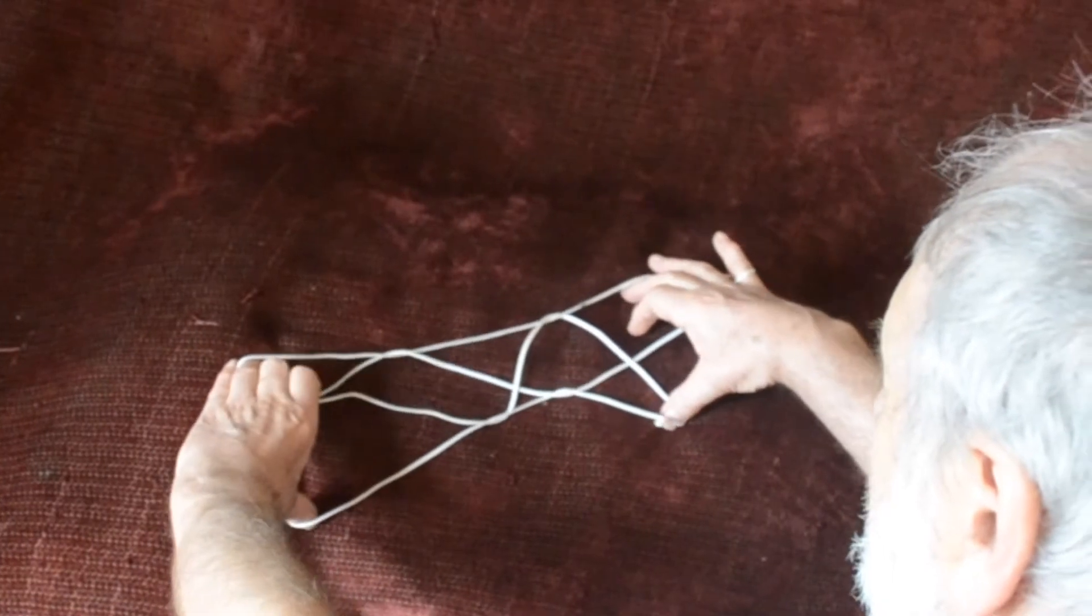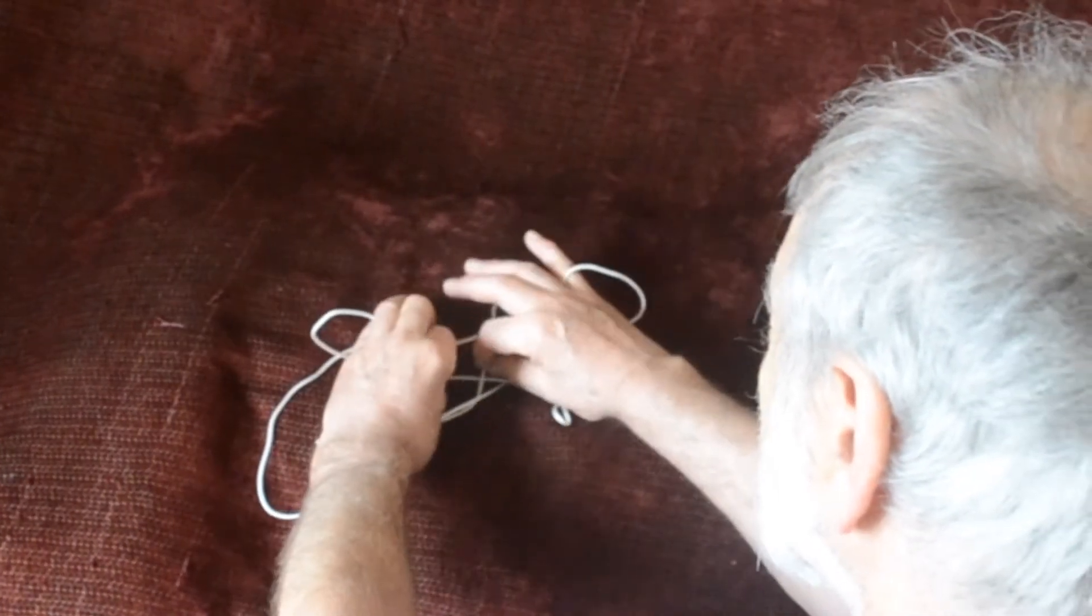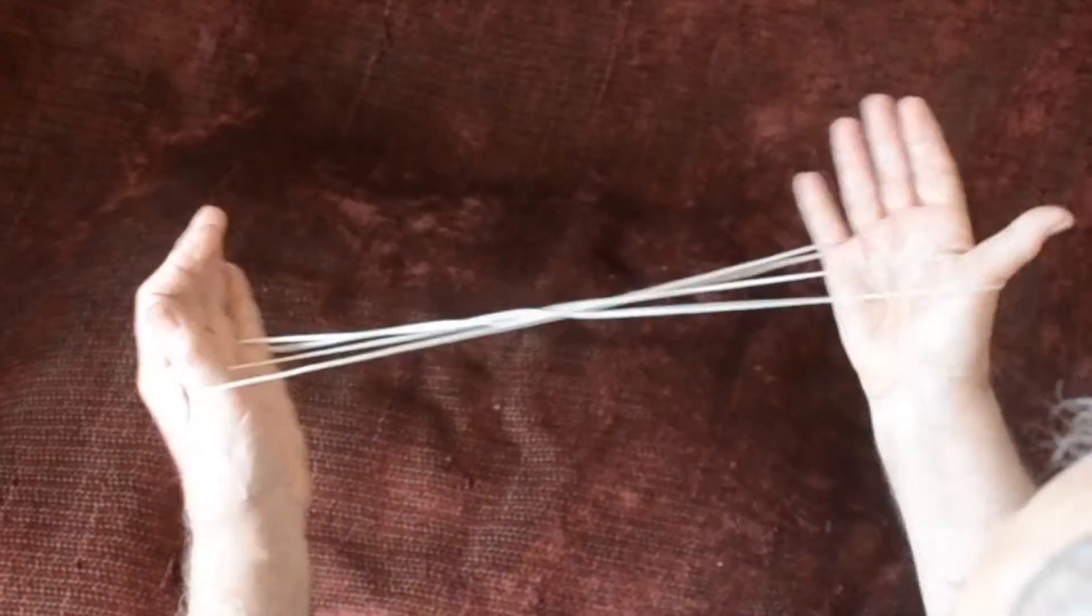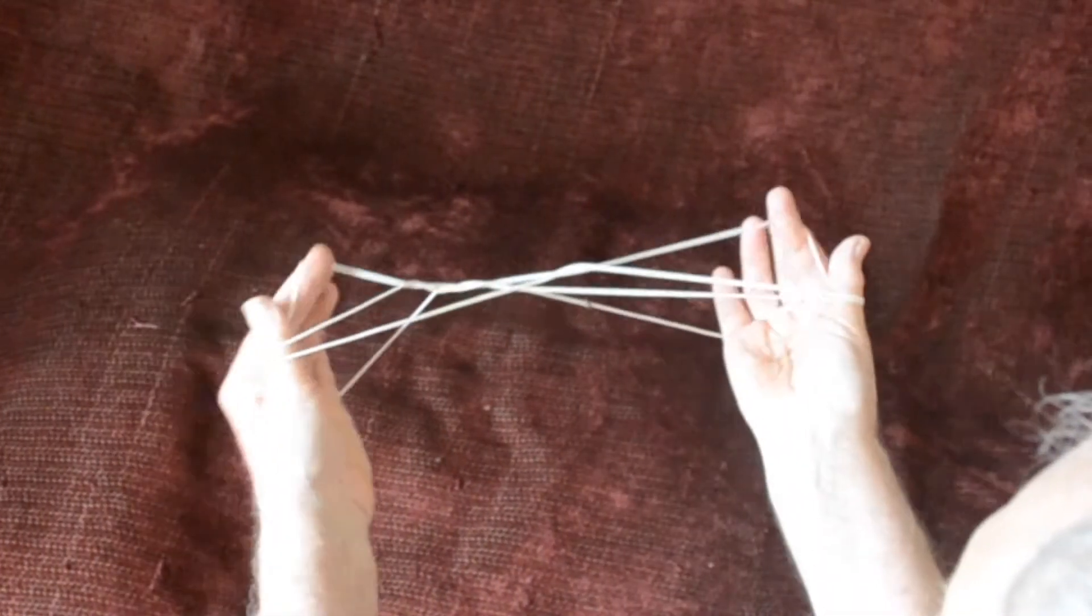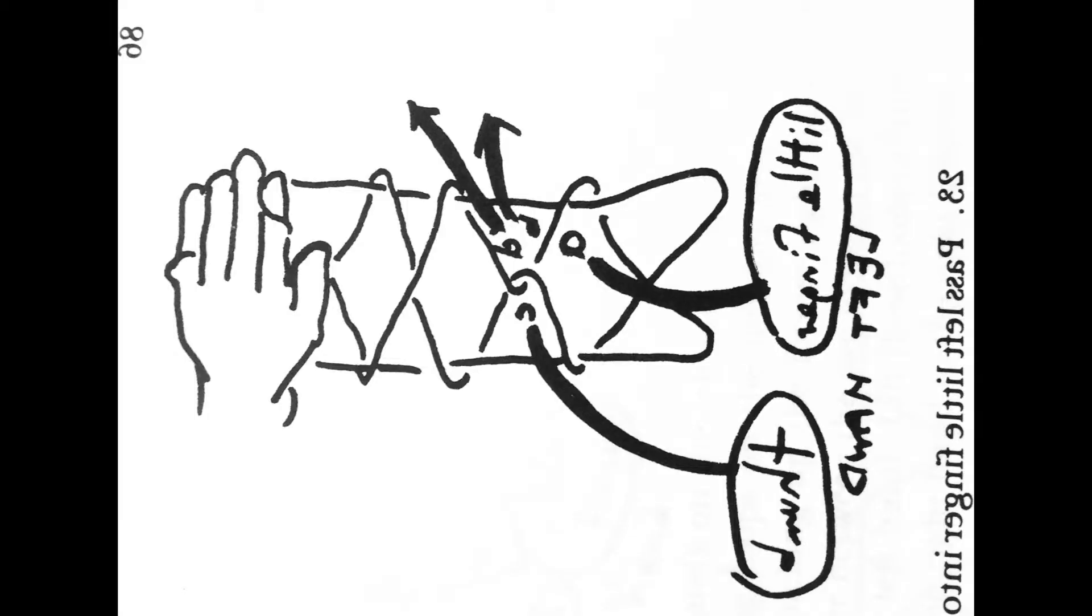And then release the thumbs. Hang on with the little fingers, but release the thumbs. Now the thumbs go into the diamonds and pick up the central two further top parts from you. Again, Caroline extension once you've picked up the thumbs and your finger string. And you have a mess of it like this.